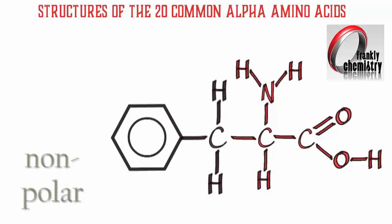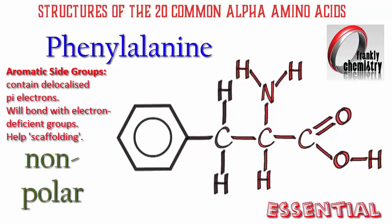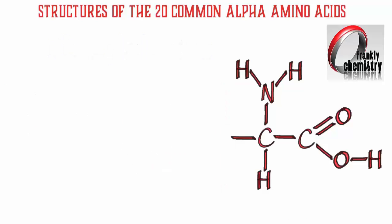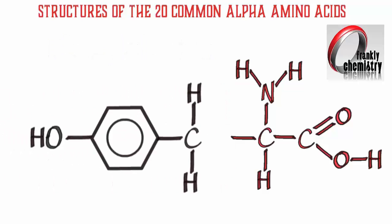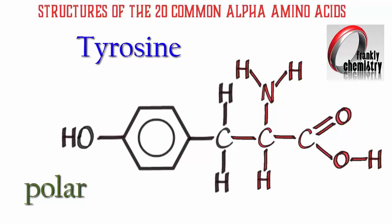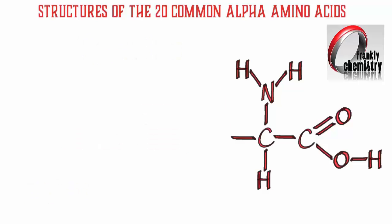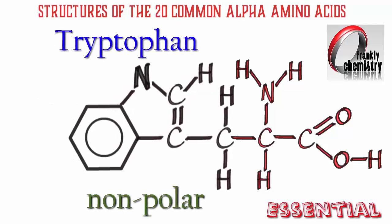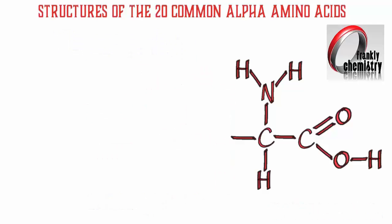Now we've got our aromatic amino acids. These aromatic groups contain delocalized pi electrons, and they bond to electron-deficient groups, which apparently helps in particular with what's called scaffolding within protein structure. Here's tyrosine, another aromatic amino acid — it's polar because of the OH group attached to the benzene ring, which allows it to hydrogen bond. And here we have tryptophan, which is considered nonpolar and is an example of an essential amino acid.